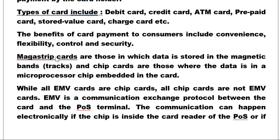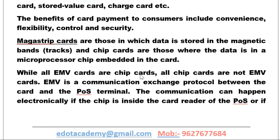Magnetic strip cards store data in a magnetic band — you may have seen ATM cards with a black strip. Chip cards store data in a microprocessor chip embedded in the card. Magnetic strips are being replaced by chips. All EMV cards are chip cards, but not all chip cards are EMV cards — this is a very important distinction. EMV is a communication exchange protocol between cards and the POS terminal.